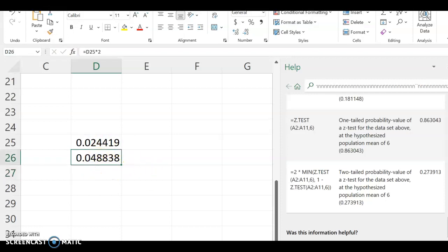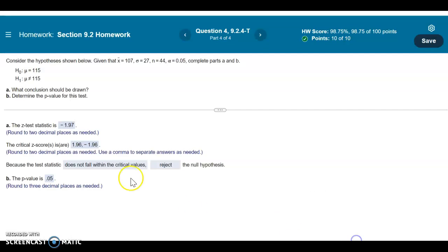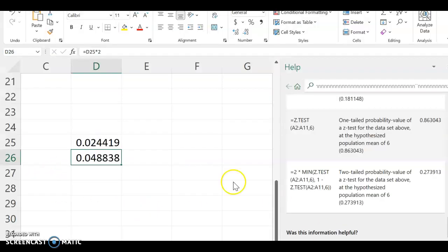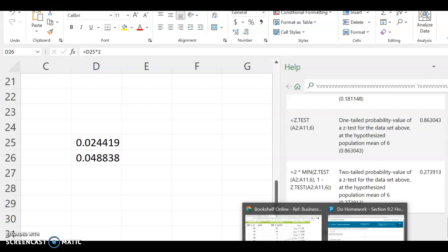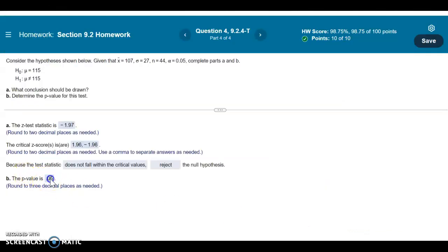And so our p-value, we're going to round to three decimal places. So 0.049. And I believe you could have put 0.049 and it be right.